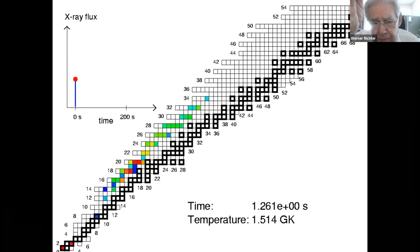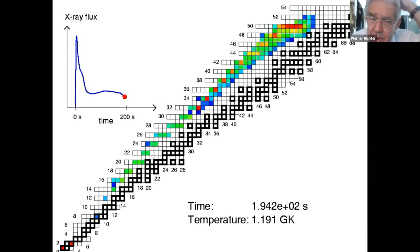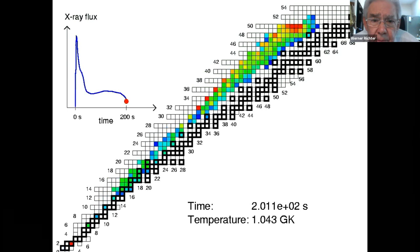The colors correspond to particular abundances. NOVAs radiate mainly visible light and ultraviolet, whereas in an X-ray burst you get mainly X-ray radiation.